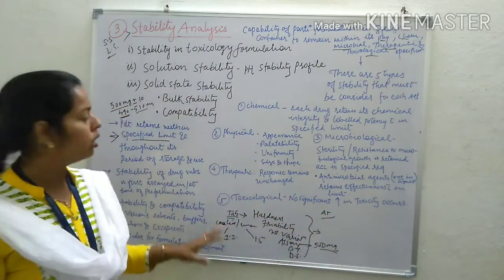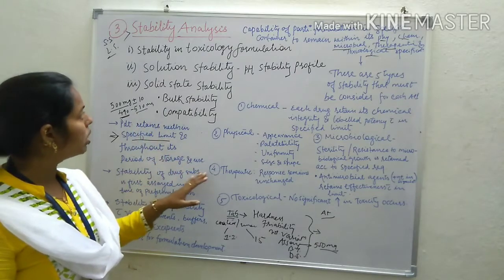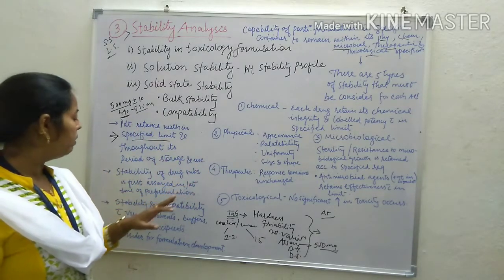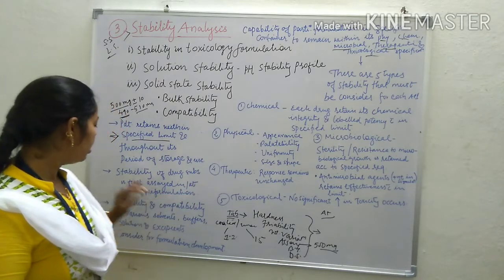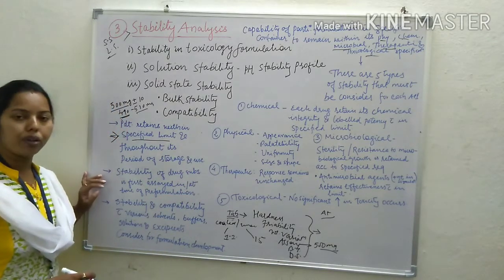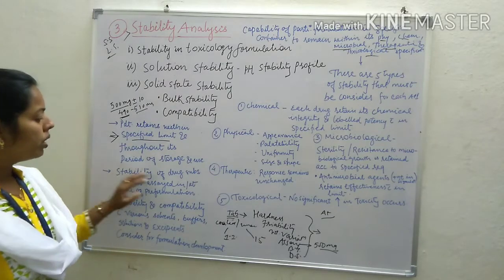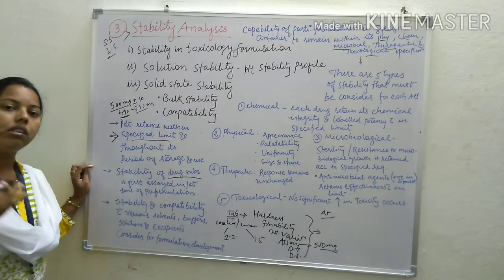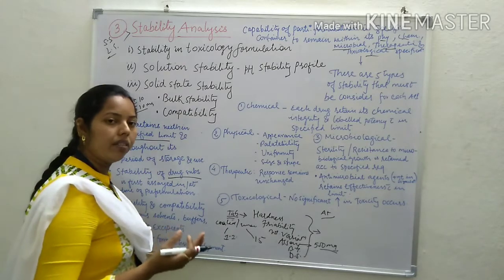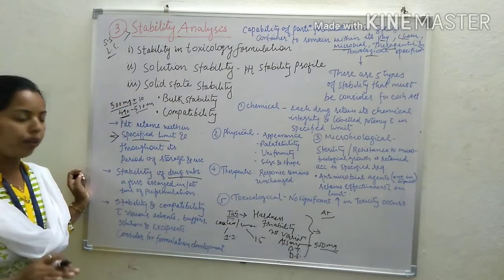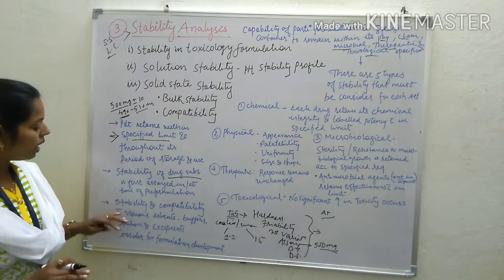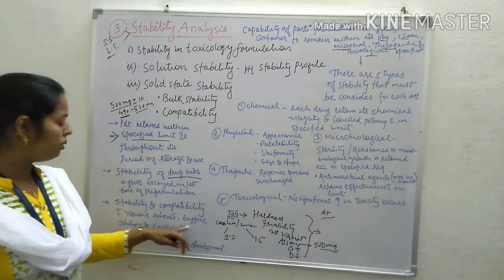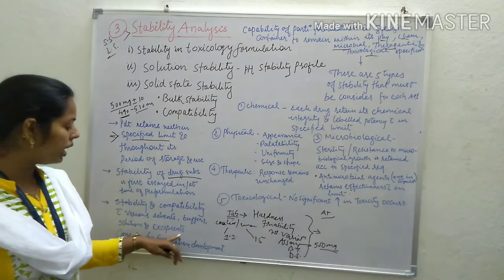This was the introduction of stability analysis. The stability of a drug substance is first assessed at the time of pre-formulation. The stability of a drug and its excipients or additives is studied at the time of pre-formulation. After that, stability and compatibility with various solvents, buffers, solutions and excipients are considered for formulation development.